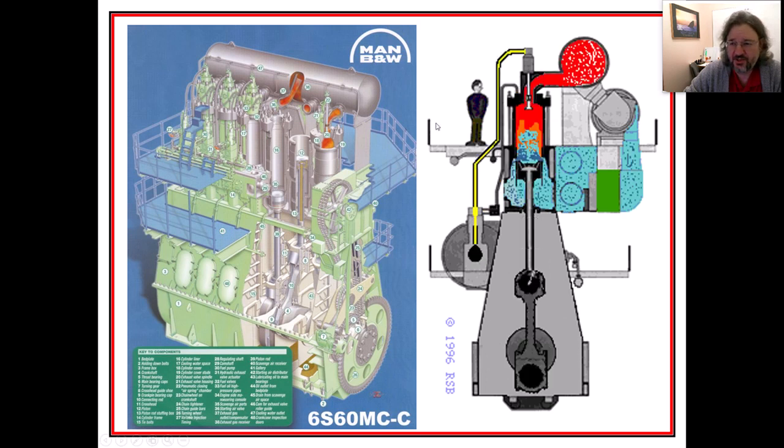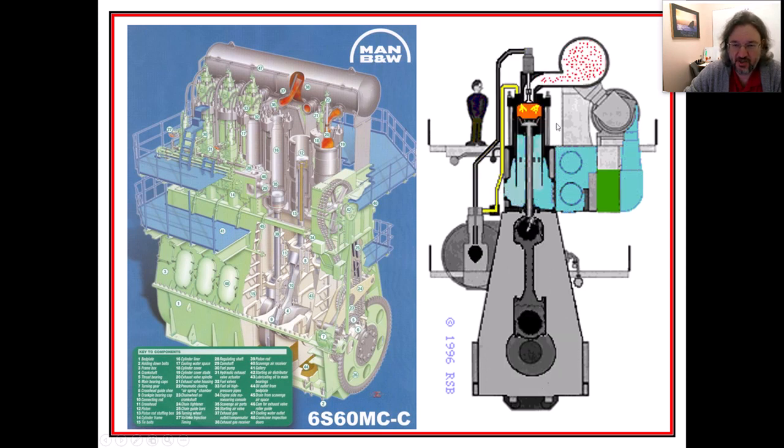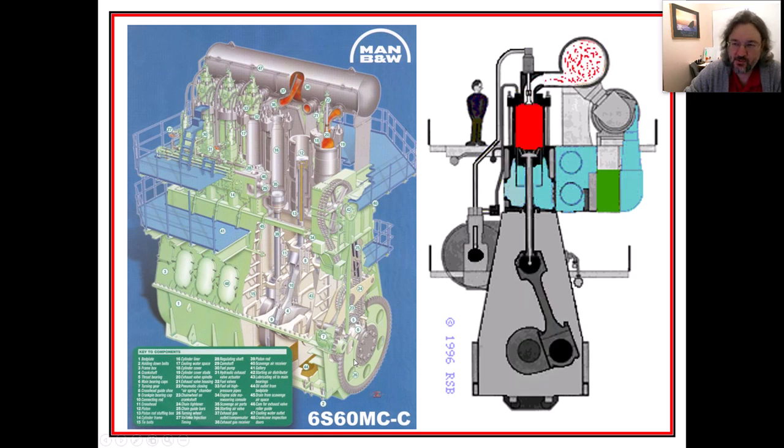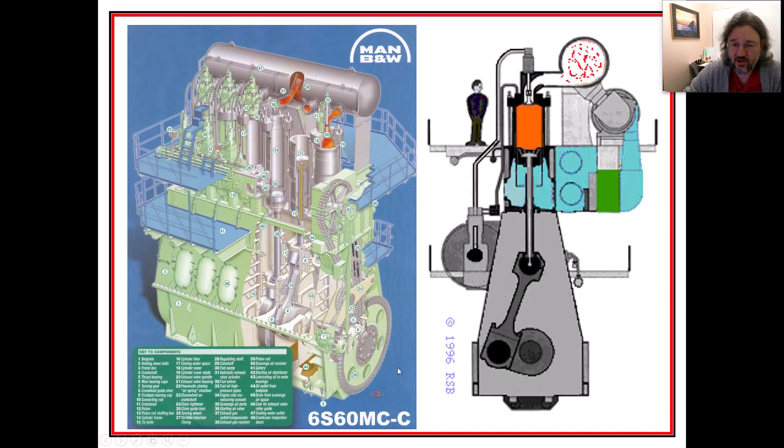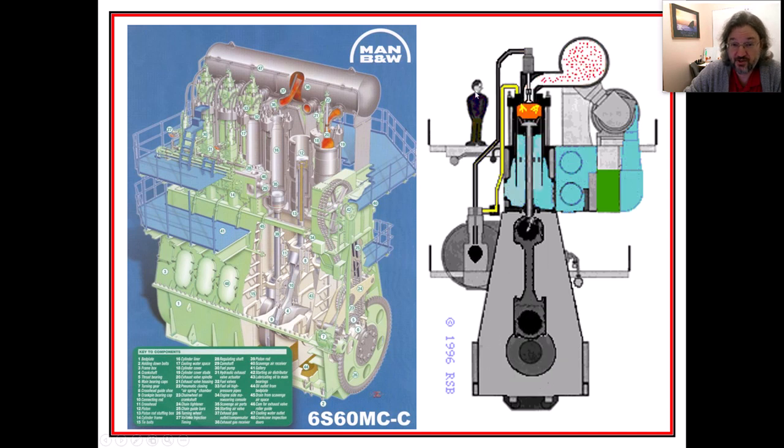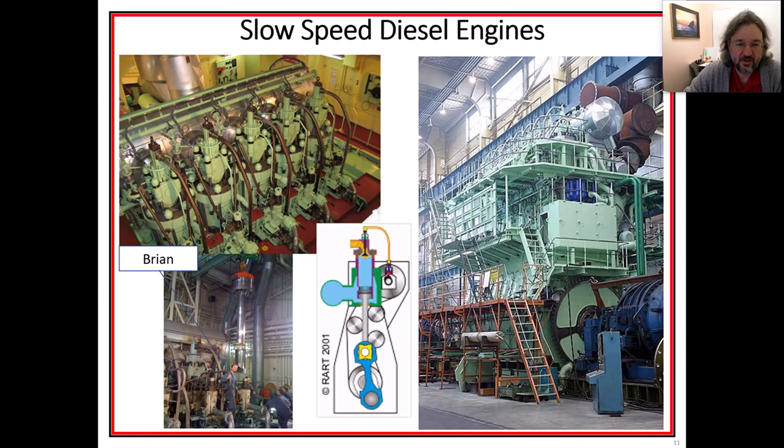Here's a really big engine that I have been on on ships that I have worked on, a Man B&W. This is called a slow speed engine because they only turn about 100 RPM, somewhere between 90 and 120 RPM is typical for slow speeds. You don't need a reduction gear, you can be directly attached to the propeller off of the output. That's how slow these engines go. But they're huge, right? You can see the size of this man right here.